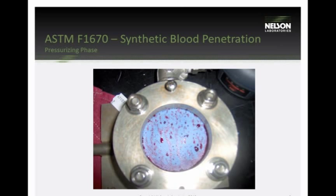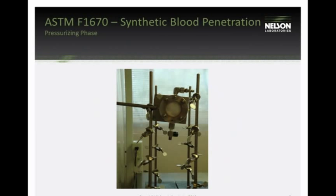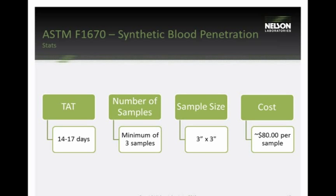If the sample doesn't fail, there's an additional 54 minutes at no applied pressure, for a total exposure time of one hour. At the end of that period, if no visual failures are observed, the sample receives a pass result. For turnaround time, budget about 14 to 17 days. The minimum per the standard is three samples at 3-inch by 3-inch, approximately $80 per sample.